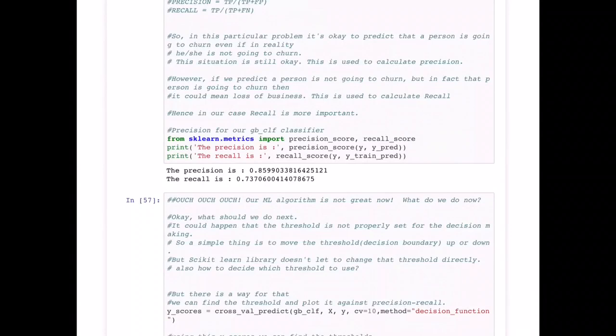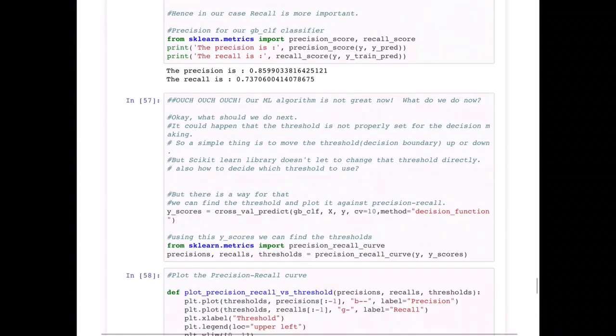So what do we do next? It could happen that the threshold that this classifier is using is not properly set. A simple thing is to move the threshold up or down. Whenever you want to identify the decision boundary for yes and no, we want to make sure that our thresholds are changed and we can see where exactly it gives us a good recall and precision. But the scikit-learn library does not let us change that threshold directly.